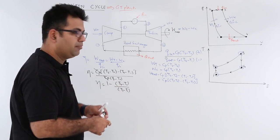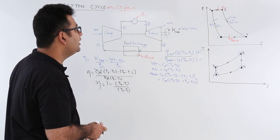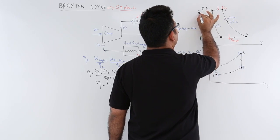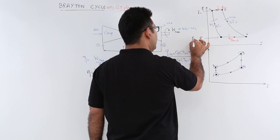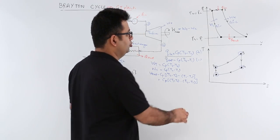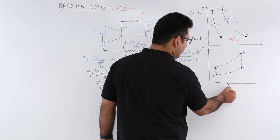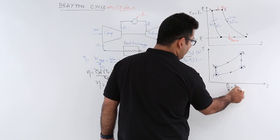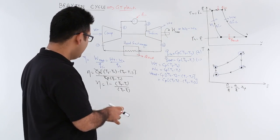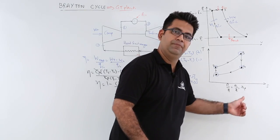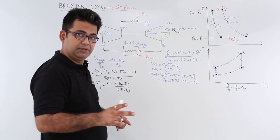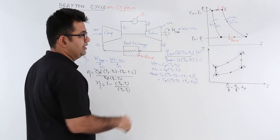Now let's go further in the analysis and look at the pressures. We know that P1 and P4 are the same, and P3 and P2 are the same. So the ratio P2 by P1, or equivalently P3 by P4, is the pressure ratio rp. Let's express the efficiency as a function of rp by taking two isentropic processes.